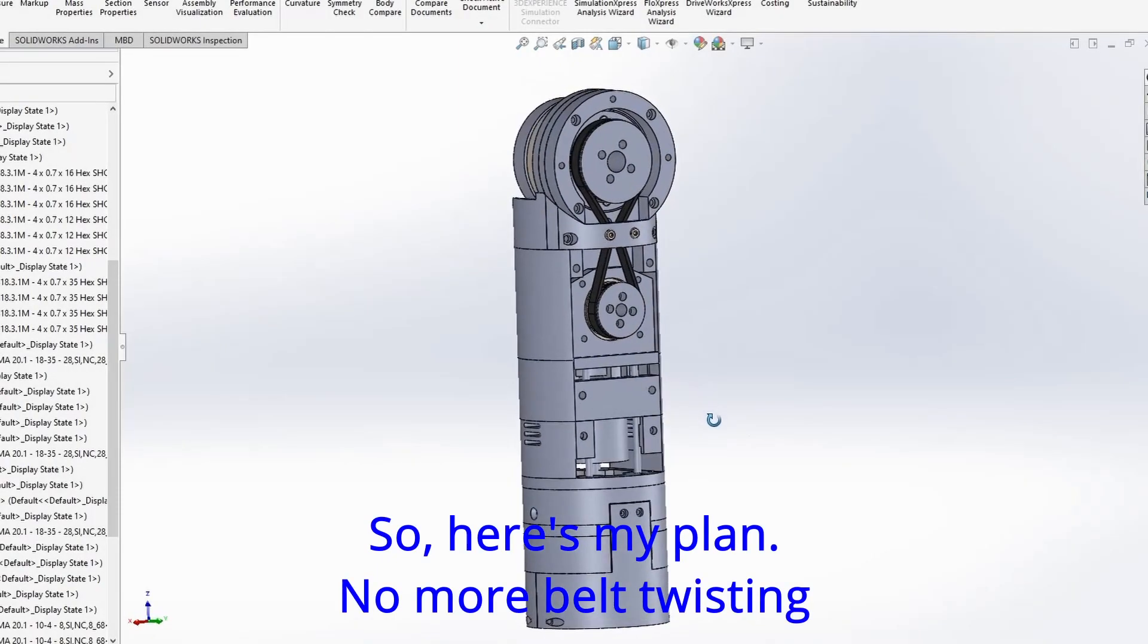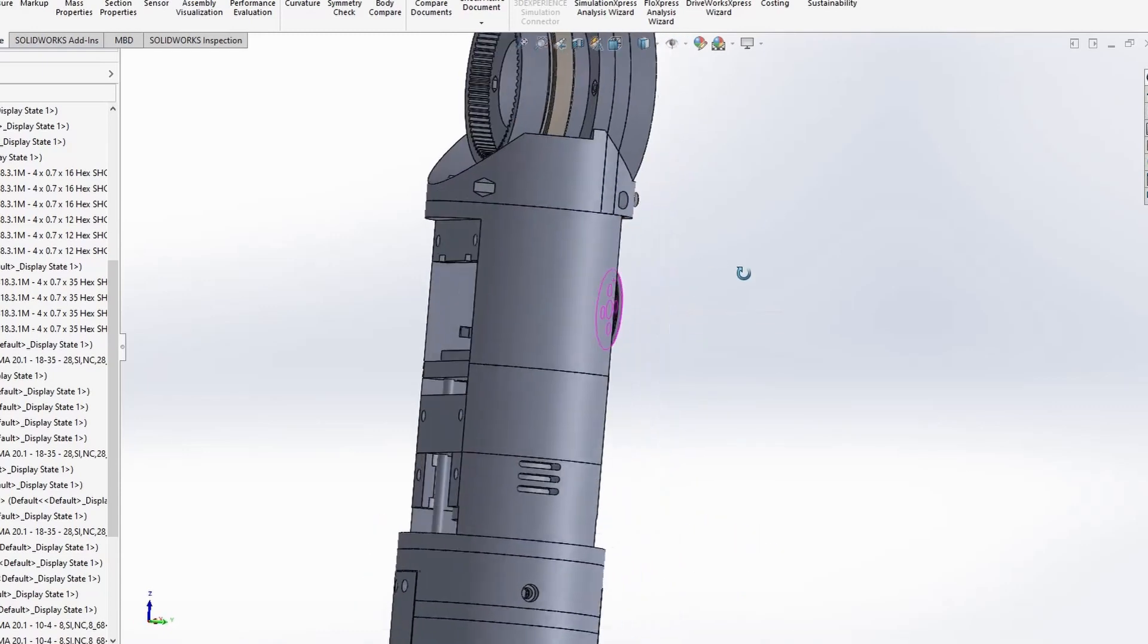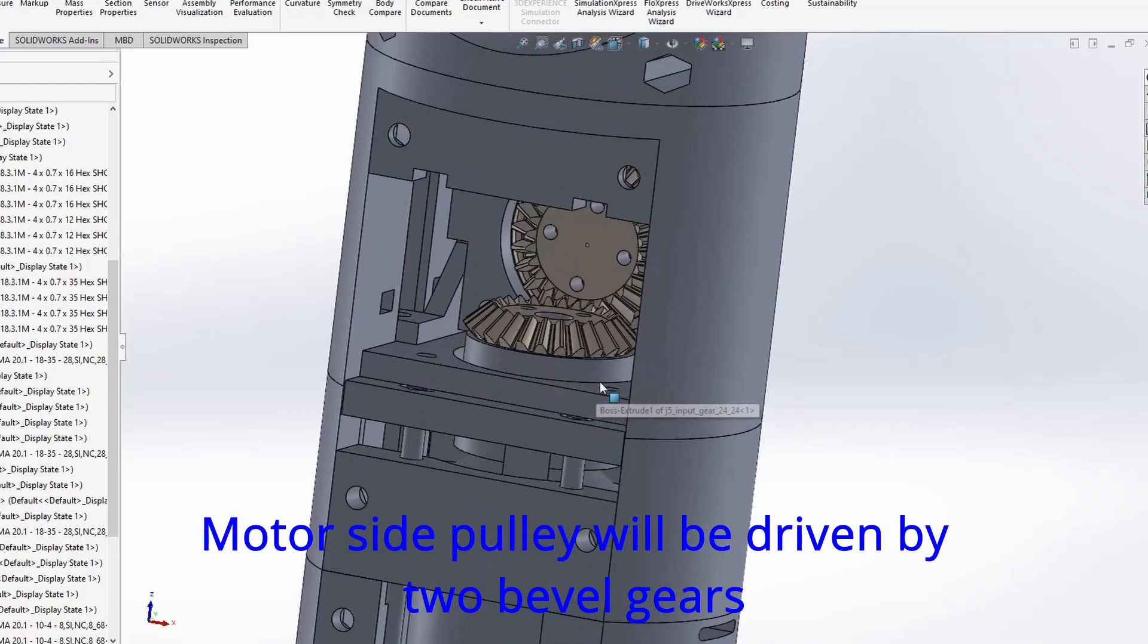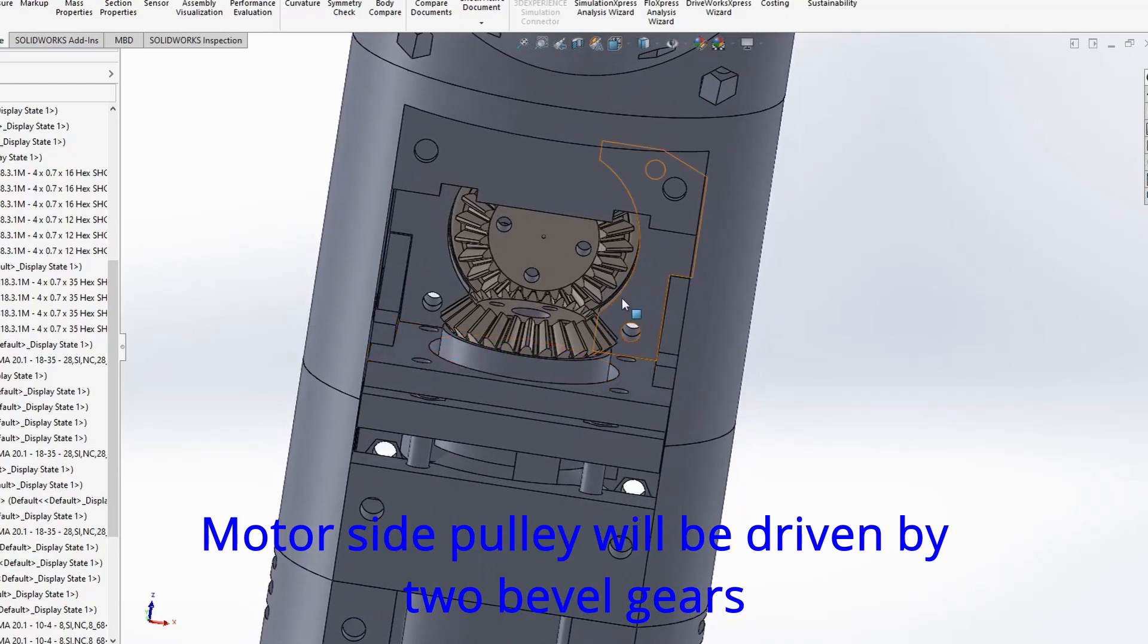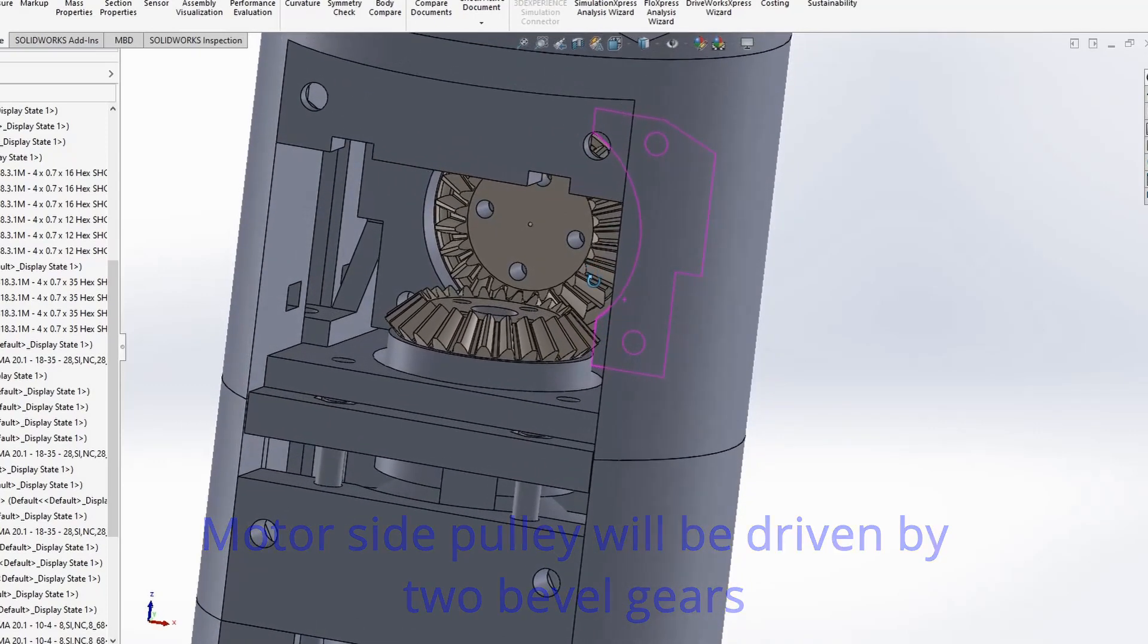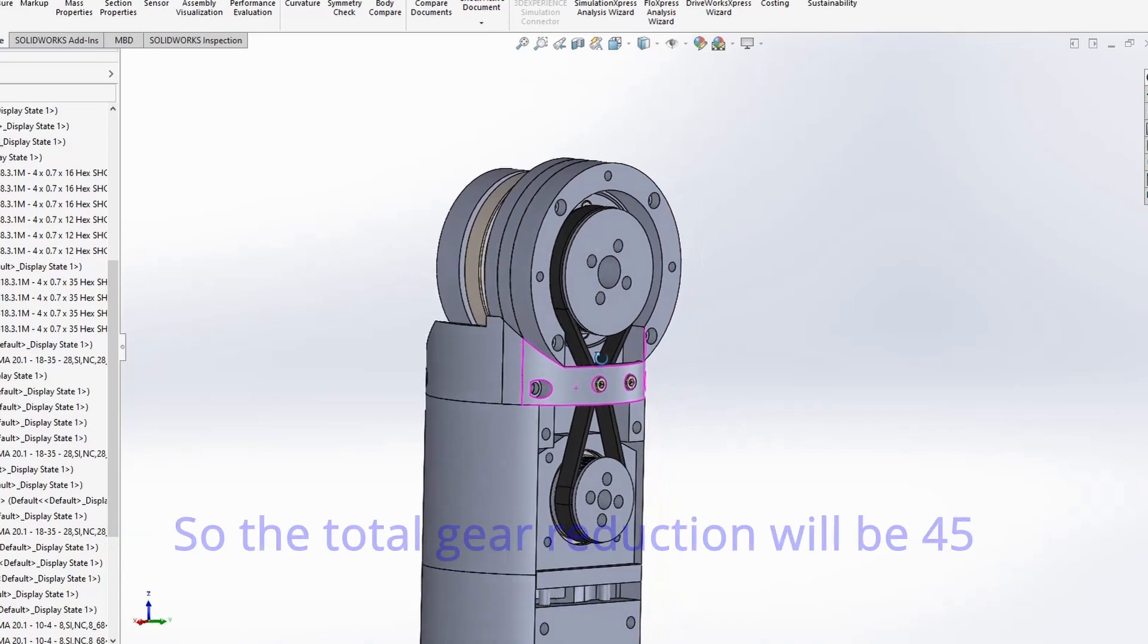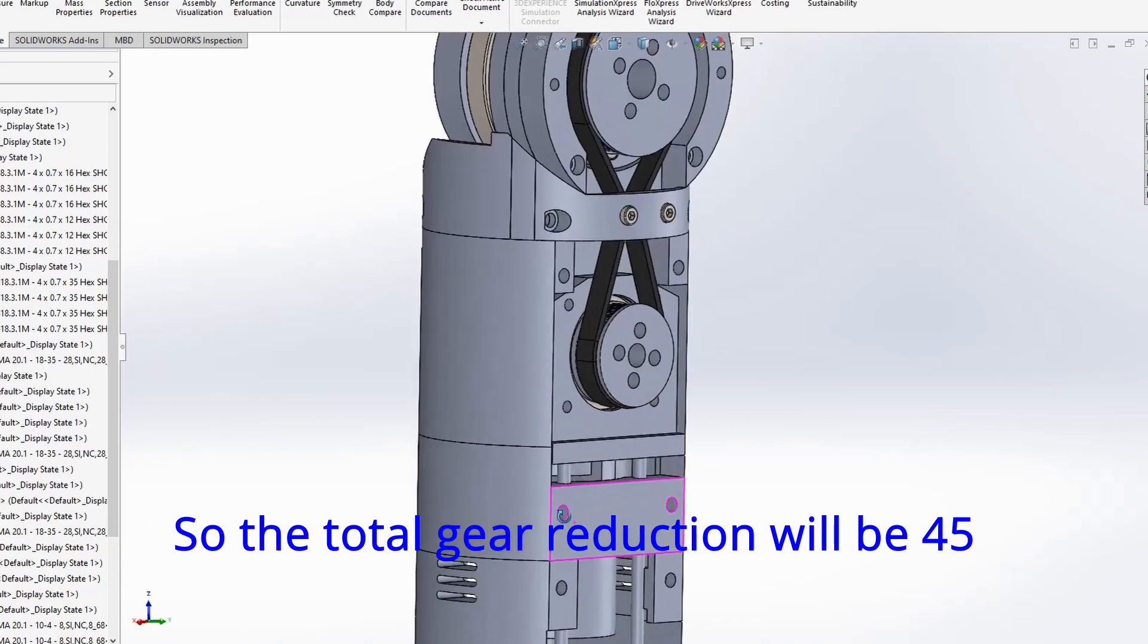And here's my plan. No more belt twisting. Motor side pulleys will be driven by two bevel gears. Gearbox input pulleys will provide additional gear reduction of 1.5. So the total gear reduction will be 45.